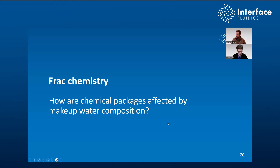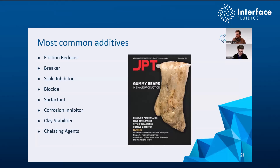Let's talk about frack chemistry — how will the chemical packages you're buying be affected by makeup water concentration? The most common additives we deal with at Interface are friction reducer, breakers, scale inhibitors, biocide, surfactant, corrosion inhibitors, clay stabilizers, and chelating agents. We're focusing on where you're spending the most money: friction reducers, breakers, and scale inhibitors. A lot of the conversation around iron and friction reducer compatibility goes back to a JPT issue from September 2020. Our phone started ringing the second that issue hit the stands, and it's something we've been working on heavily ever since.